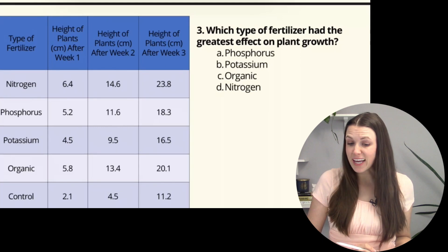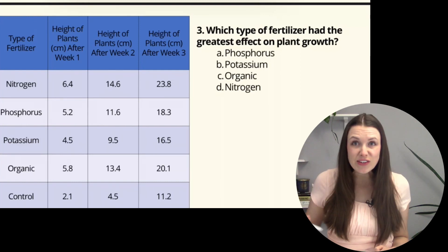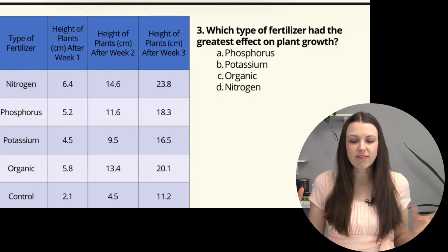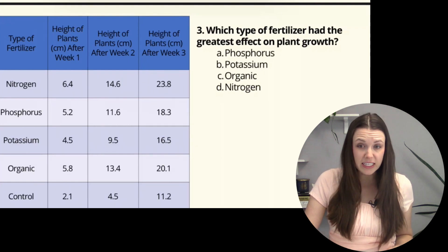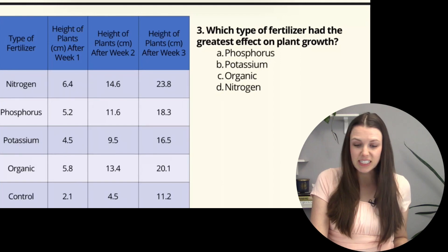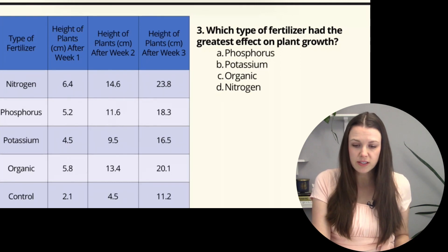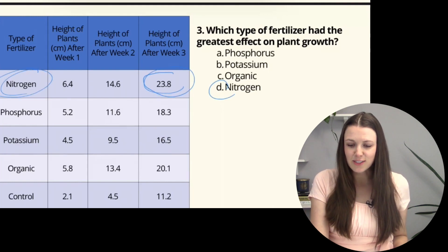Question 3: Which type of fertilizer had the greatest effect on plant growth? If you look at the height of the plants after three weeks, nitrogen is at 23.8 centimeters, phosphorus 18, potassium 16, organic 20, and the control group 11. The highest is nitrogen, so the answer is D.